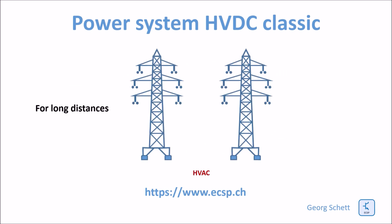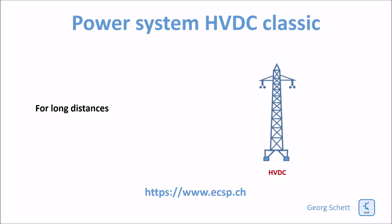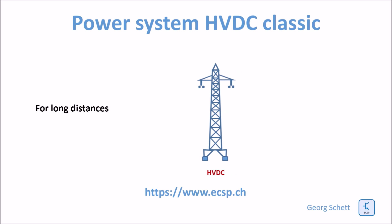Therefore, for long-distance transmission, HVAC is not the solution of choice — it is more and more replaced by HVDC. HVDC is the best solution for very long transmission distances, normally above 1000 km.